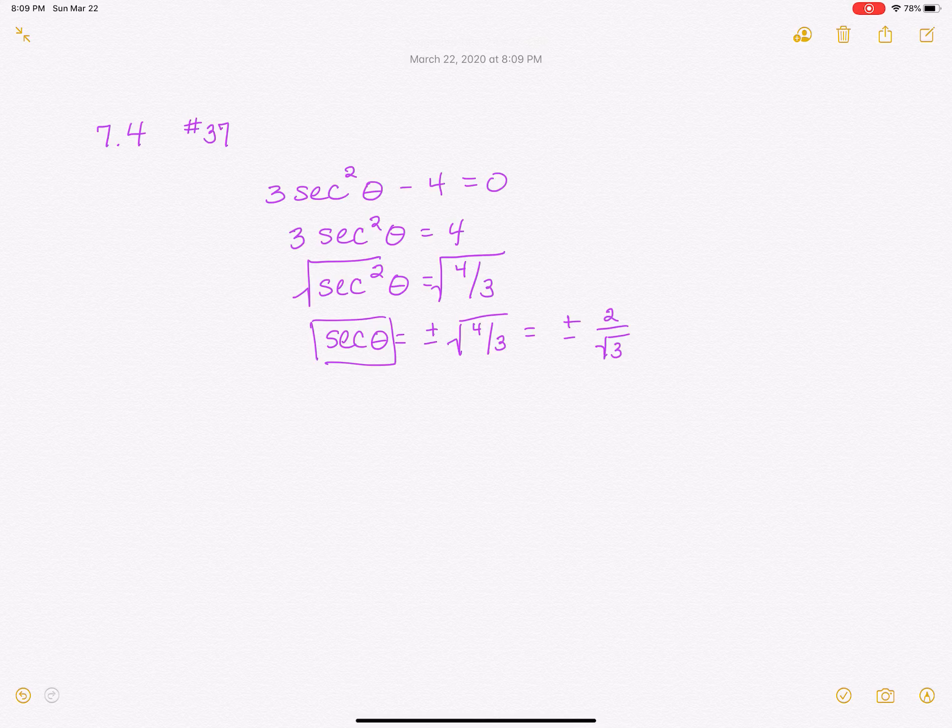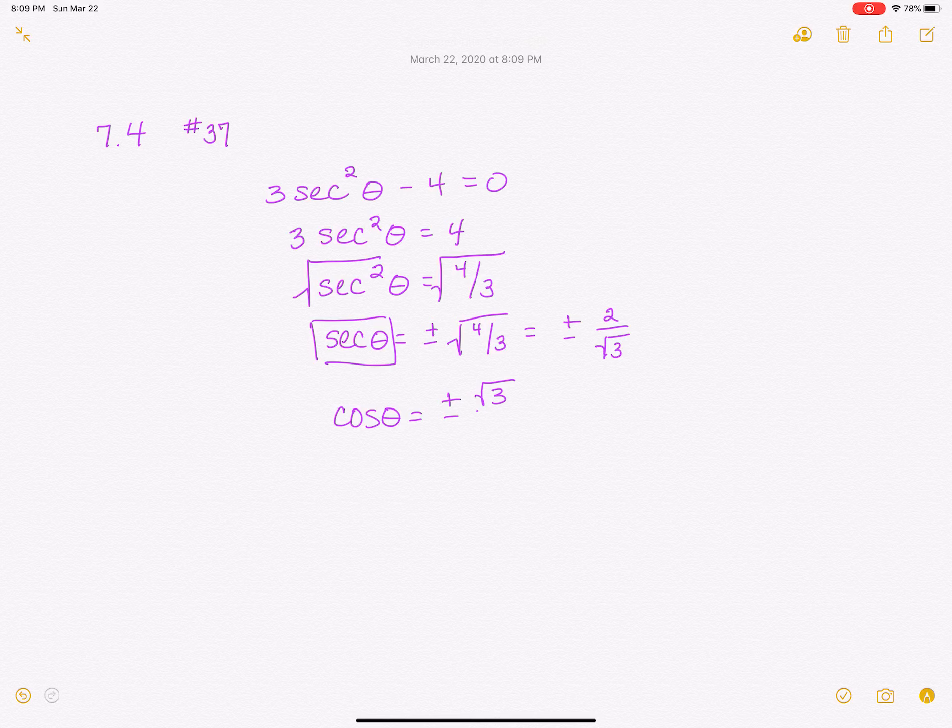But you know that the secant of theta, its reciprocal is cosine. So if I'm looking at this, the cosine of theta is going to be the reciprocal of that. So that's going to be the positive or negative, and then I'm just going to take the reciprocal of that, which is the square root of 3 over 2. Now, you should recognize this.